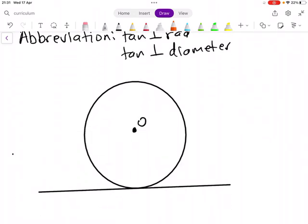So what does that mean? It means that if I have a radius, this radius will form an angle of 90 degrees if this line is known to be a tangent. Okay, so a radius will form an angle of 90 degrees with a tangent.